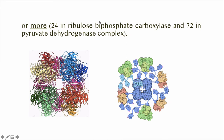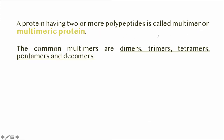In the case of ribulose bisphosphate carboxylase, we have 24 polypeptide chains, and 72 in the case of pyruvate dehydrogenase complex. A protein having two or more polypeptides is called a multimer or multimeric protein. Common multimers are dimers, trimers, tetramers, pentamers, and decamers.